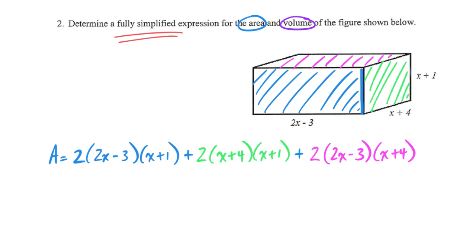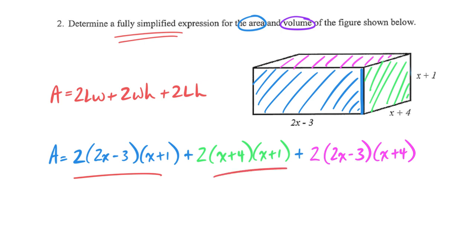I'll build the area of the whole box in one expression. My two blue rectangles (front and back): 2(2x − 3)(x + 1). My two green rectangles (the sides): 2(x + 4)(x + 1). My two pink rectangles (top and bottom): 2(2x − 3)(x + 4). Notice that this uses every combination of length, width, and height exactly once — no dimension is paired with another more than once. That's the relationship: area = 2lw + 2wh + 2lh.